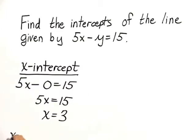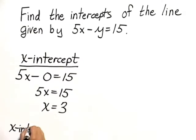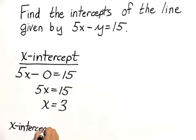This tells us that the x-intercept is the point (3, 0).